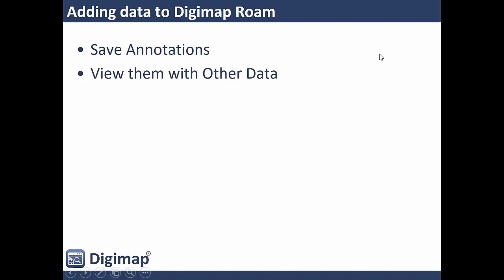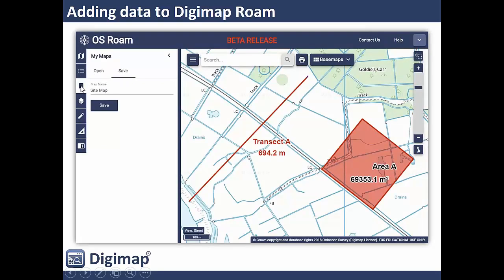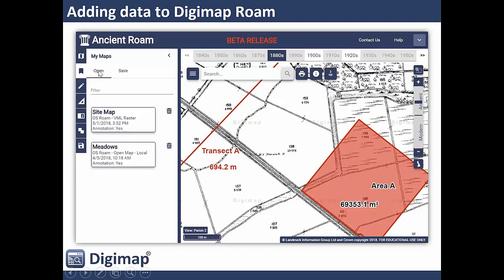Once you've saved your annotations using the save button, you can view them with all other data collections your institution has access to. Click the bookmark icon on the left-hand side in the new Ordnance Survey Roam interface and you'll have open and save options. Saving as a site map stores the annotations and the scale as a bookmarked map. Opening it in a different collection — say the historic data — gives historical context, showing what your study area looked like in the 1880s with notations for drained fields and those that flood regularly.